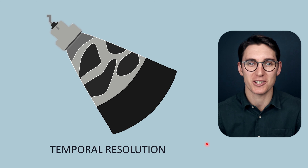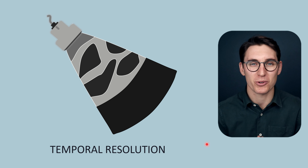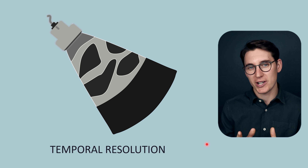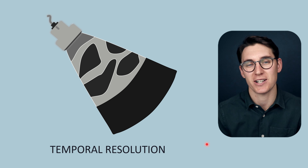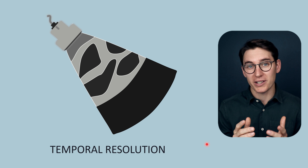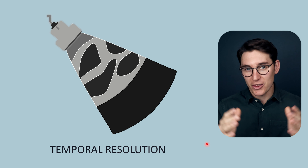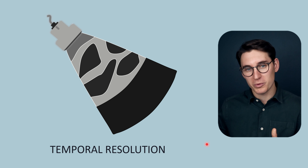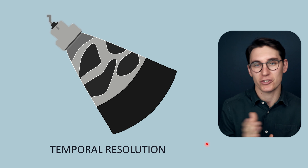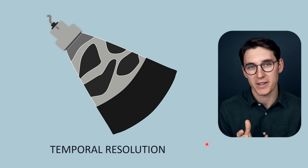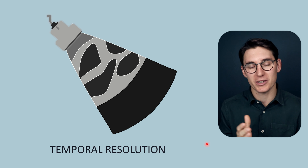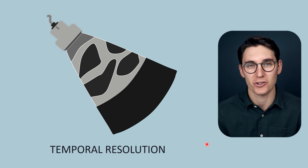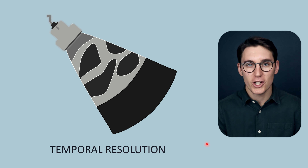Let's move on to our final type of resolution, which is temporal resolution. Temporal resolution is the ultrasound machine's ability to detect and display real-time movement within our ultrasound image. That movement comes either from the organ we are scanning — the heart beating or the lungs moving as a patient breathes in — or from the operator moving the ultrasound probe. How accurately that movement is represented within our image is what's known as temporal resolution.